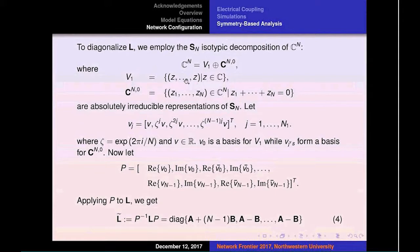V_1 is the vector space where the synchronization regime occurs. Then we have the orthogonal vector space that in the literature has been identified as Z_N^0. We can show these are the absolutely irreducible representations of the group.